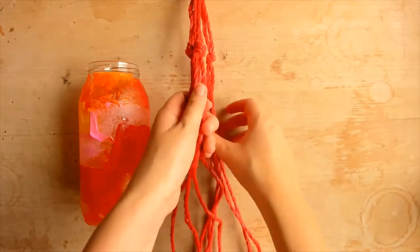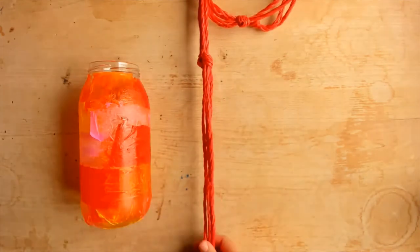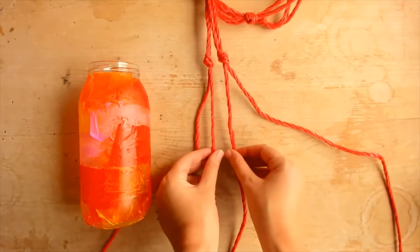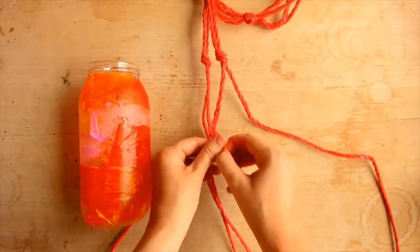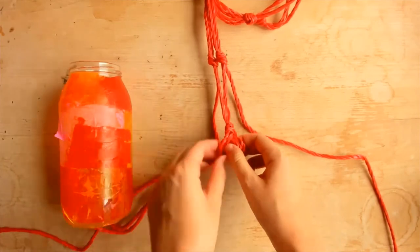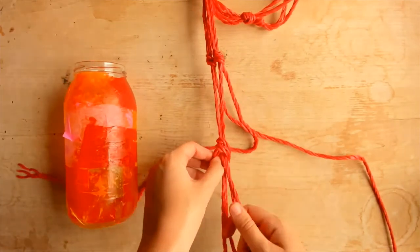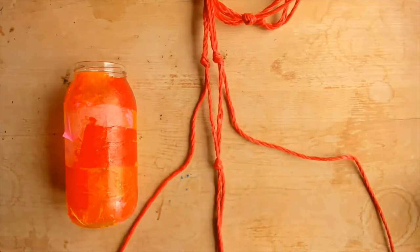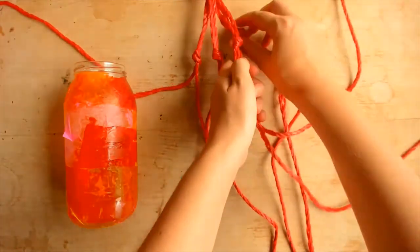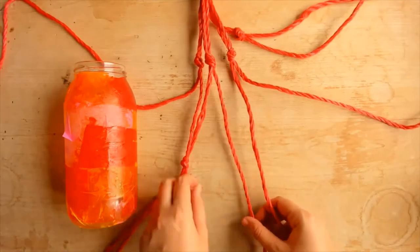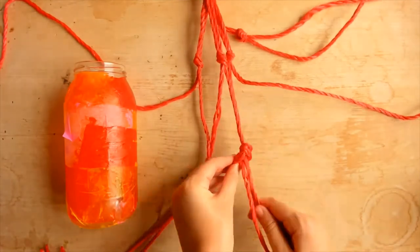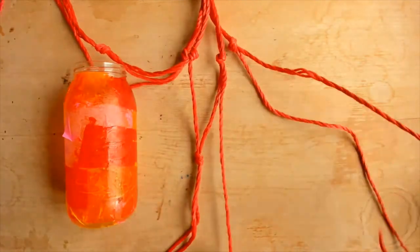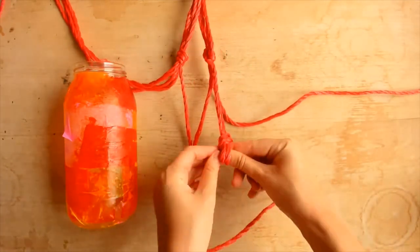Now take two of the knots you just tied which are next to each other, and from each knot take one cord. Repeat until you have four knots. Make sure to keep these second knots about the same height too. They should be about a third of the way up from the bottom of the jar.